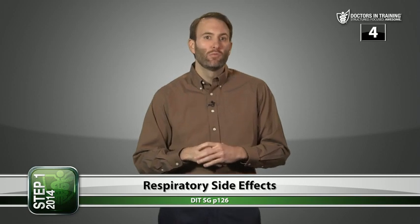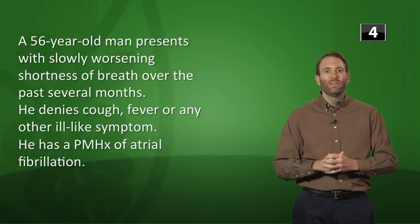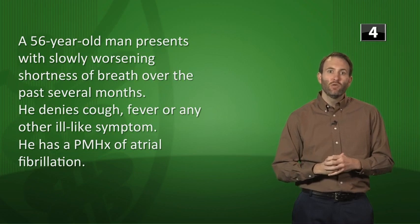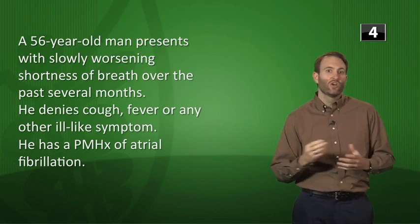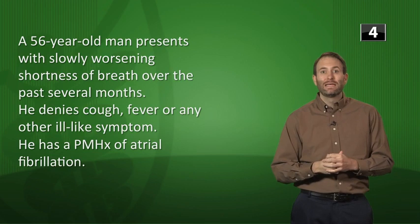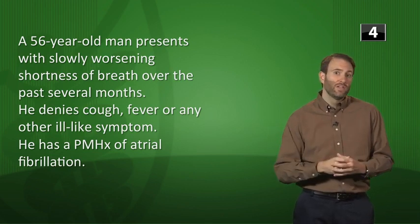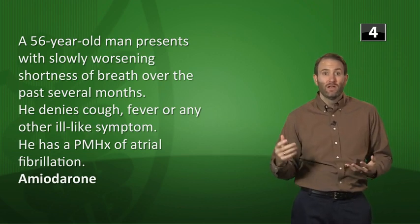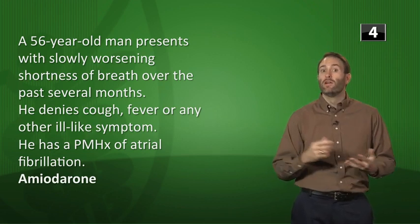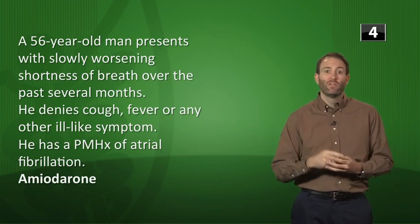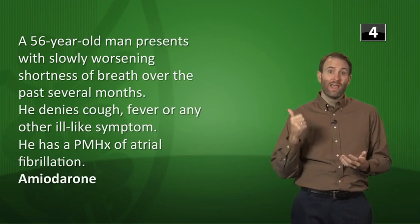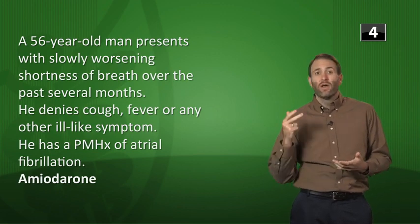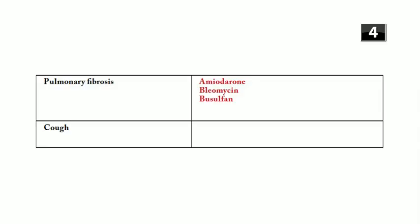Respiratory vignette: a 56-year-old man with atrial fibrillation presents with slowly worsening shortness of breath. The answer is amiodarone — a very important side effect is pulmonary fibrosis. With amiodarone, check PFTs (pulmonary function tests), LFTs (liver function tests), and TFTs (thyroid function tests). Other drugs causing pulmonary fibrosis: bleomycin and busulfan, both anti-cancer drugs.